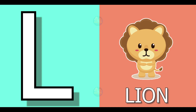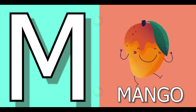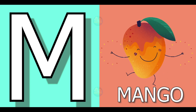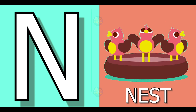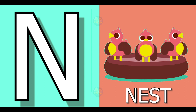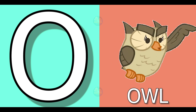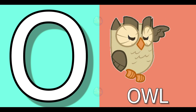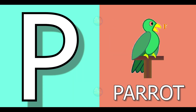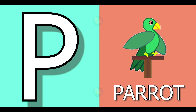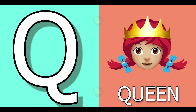L for lion, lion means share. M for mango, mango means arm. N for nest, nest means ghosla. O for owl, owl means ullu. P for parrot, parrot means tata. Q for queen, queen means running.